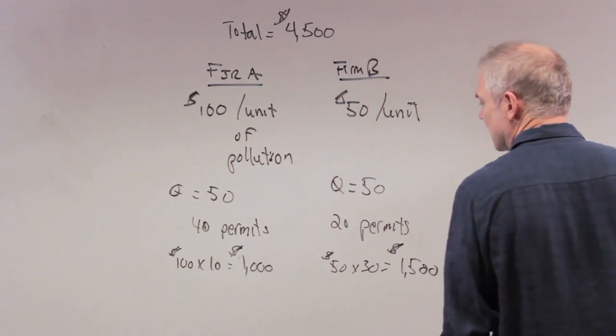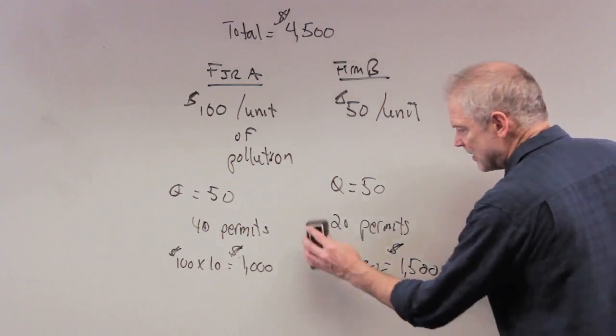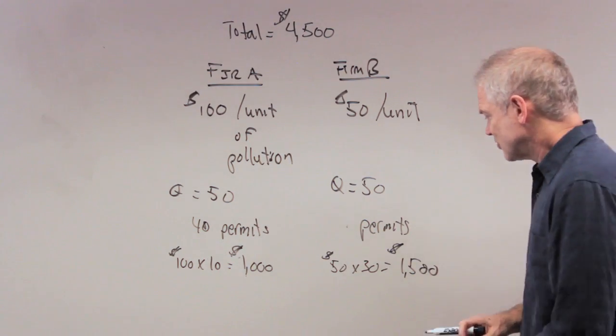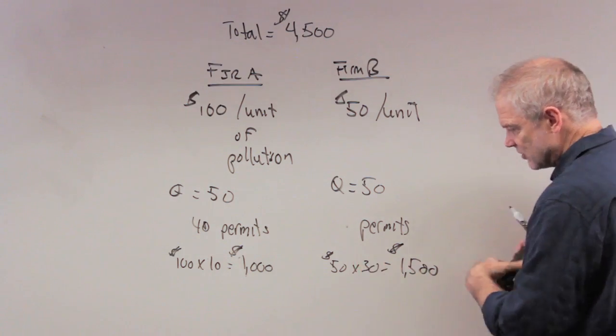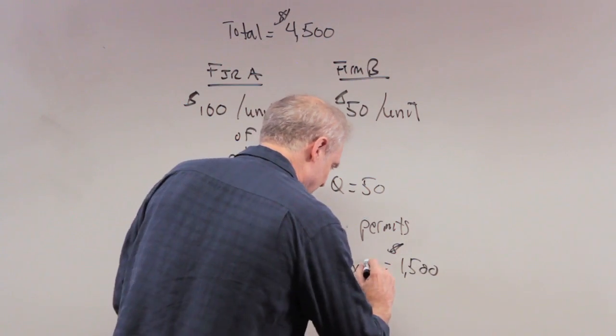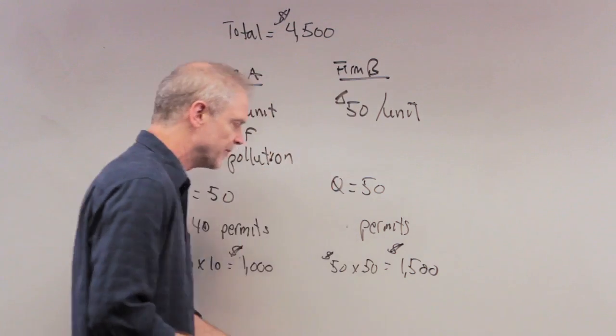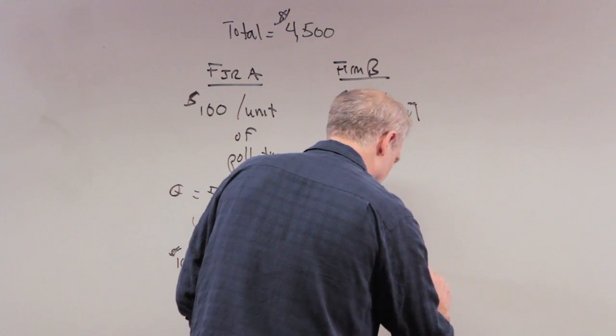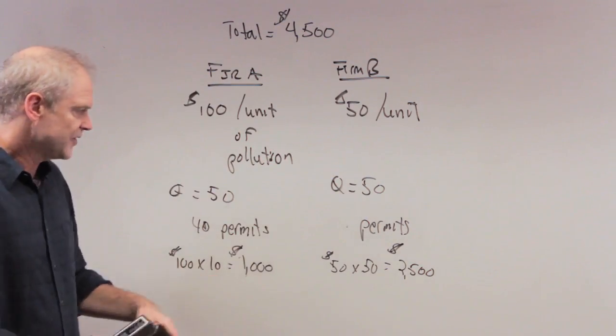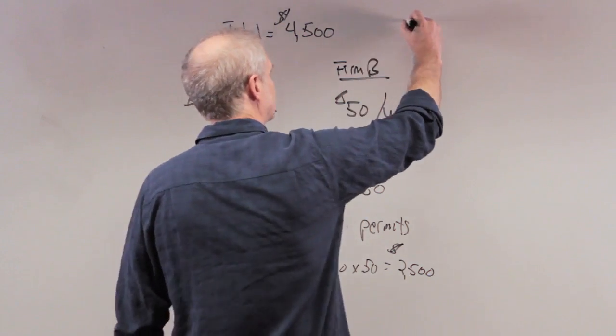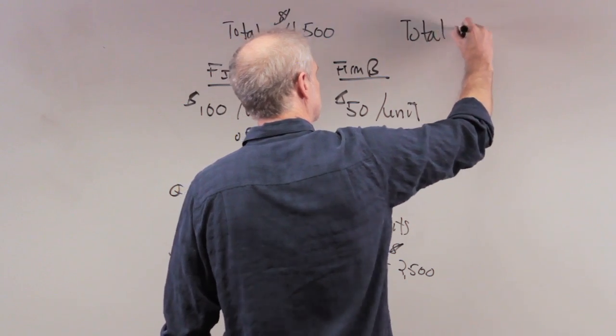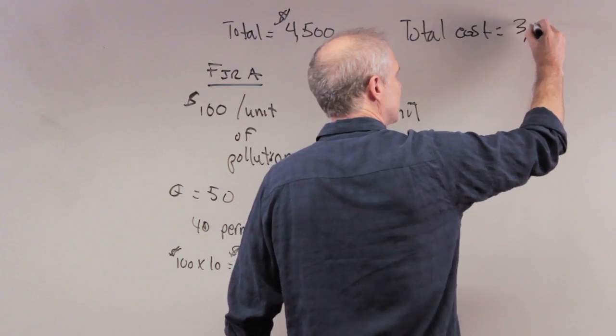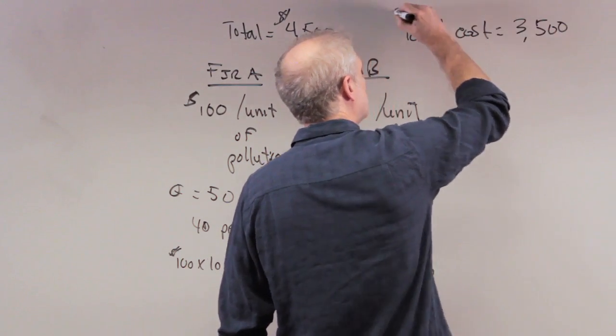But now, what happens to firm B? Well, firm B now has no permits, so they have zero permits. So now they must eliminate all 50 units. So that's going to be the $50 times the 50 units they have to get rid of, because they have no permits left. They sold them. So 50 times 50 is $2,500 plus $1,000. So now the total cost is equal to $2,500 plus $1,000 is $3,500. And that's an important difference.